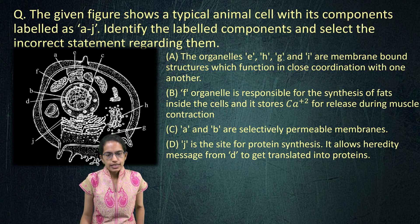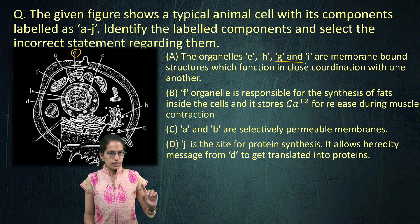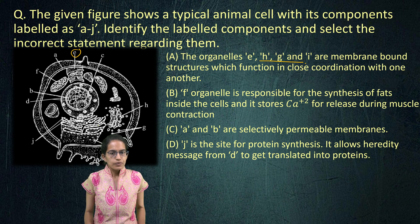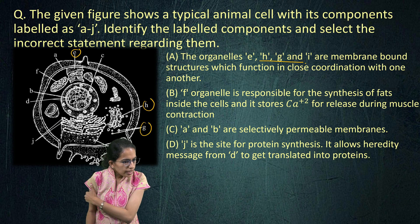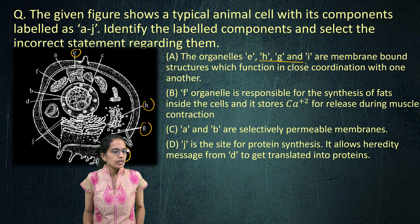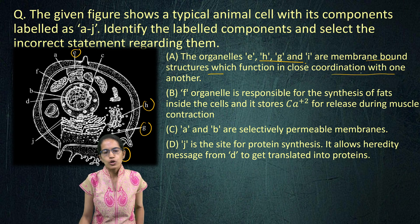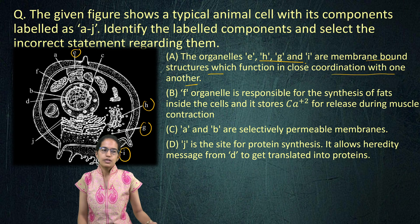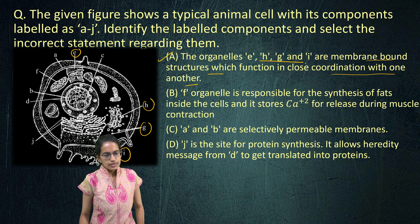Organelle E, H, G, and I — E is the endoplasmic reticulum, H is the Golgi apparatus, G is the ribosome, and I is the smooth and rough ER endoplasmic reticulum. Now, these are all membrane-bound structures — that's correct — and they have close coordination with one another because all of them are involved in synthesis of protein. So again, this statement is correct.